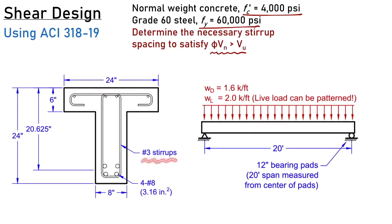We'll be designing using number three stirrups. Our load is 1.6 kips per foot in dead load and 2.0 kips per foot in live load, which can be patterned, meaning we don't have to place it along the entire span. We have a 20 foot span length and 12 inch bearing pads on either end, which means the clear span is 19 feet.